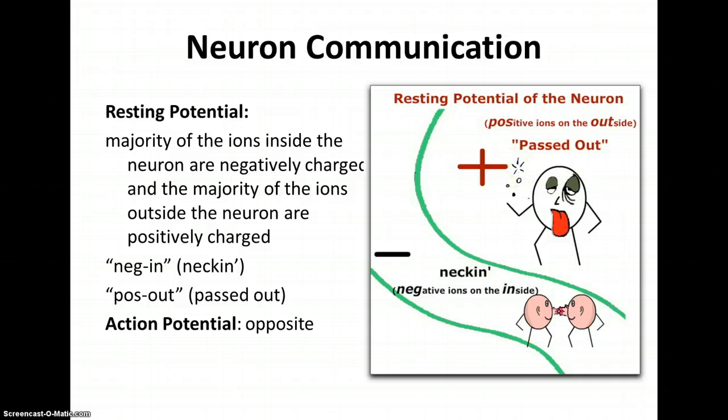Now, all of this happens somewhere between like a hundred or even a thousand times a second. Some neurons only travel about two miles per hour when they're traveling across the neural fiber. But some travel as fast as 200 or more miles per hour.